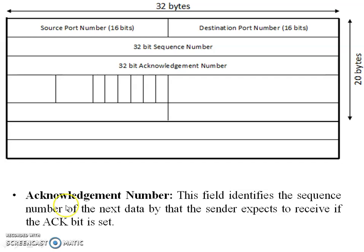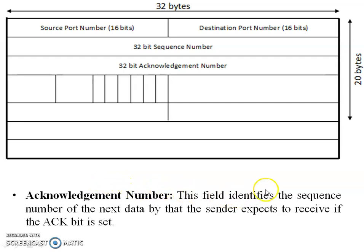The acknowledgement number field identifies the sequence number of the next data that the sender expects to receive, if the acknowledgement bit is set. For example, if block number 1 is sent and received at the destination, the destination sends back to the sender that block number 1 is received and the next expected data will be block number 2.